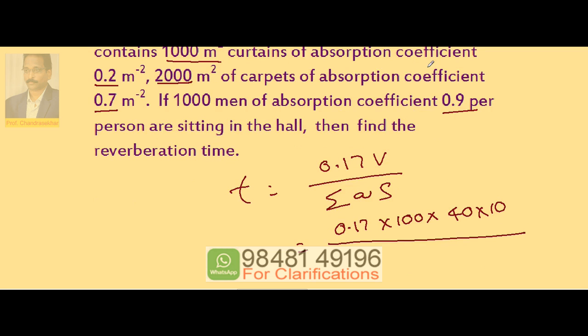First one, curtains absorption coefficient 0.2 x 1000, plus 2000 m² carpets with coefficient 0.7 x 2000, plus persons—each person has absorption coefficient 0.9. One thousand persons are there, total absorption of thousand persons is 900.